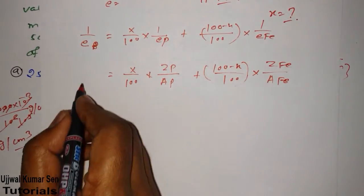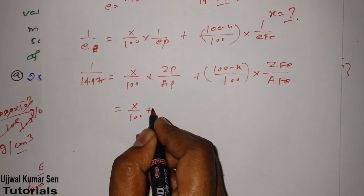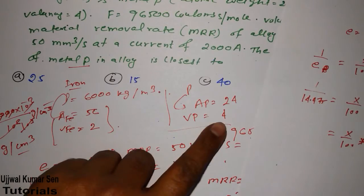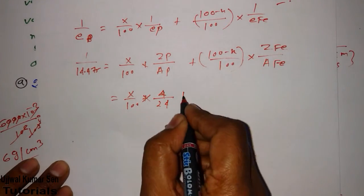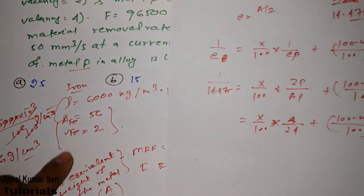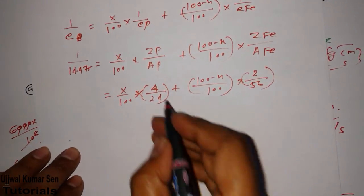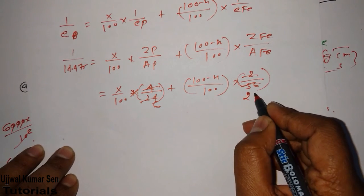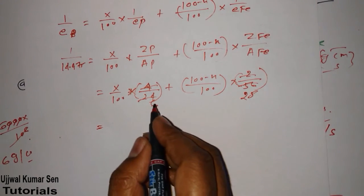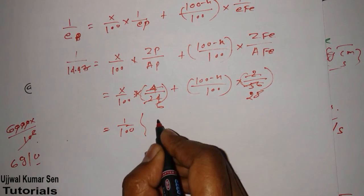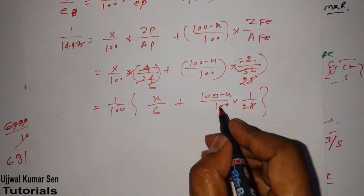We have to find out this X in percentage. We have given E is equal to 1 by 14.475. X by 100, we have given valence for P is 4 and atomic weight of P is 24, plus 100 minus X by 100 multiple Fe is 2 and atomic weight of iron is 56. We have given all these. I can get common from these 1 by 100. So what remaining? X by 6 plus 100 minus X by 100, 1 by 28. 1 by 100 I have to take LCM from these two.